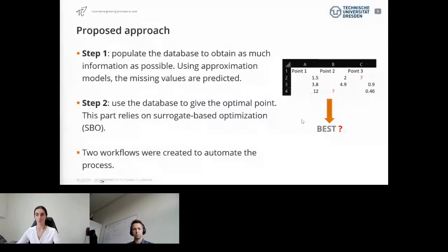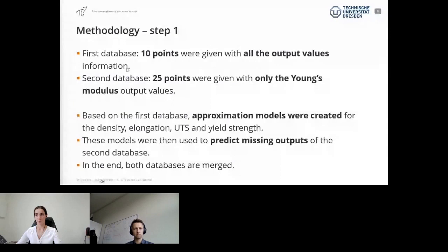In the second step, we used this populated database to perform optimization and to get this optimal point from the optimization problem. This optimization part relies on surrogate-based optimization, which we call SBO. In the end, with those two steps, we had two workflows to automate the process. Going to the first step with the first database coming from actual measurements, experimental values, we had 10 points where we had all the output values information—the two objectives and three constraint values—whereas a second database was given from previous simulation and previous knowledge of this material with 25 points, but from those points we only had access to the Young's modulus values. We had to guess or predict the other outputs of the models based on the first database.